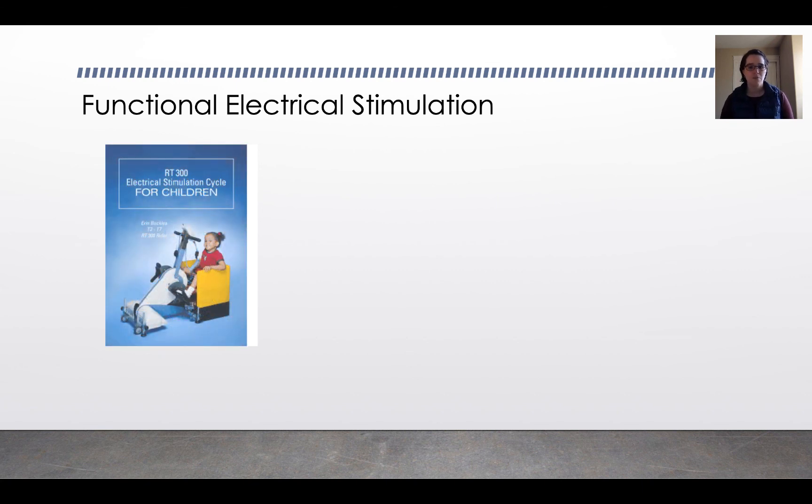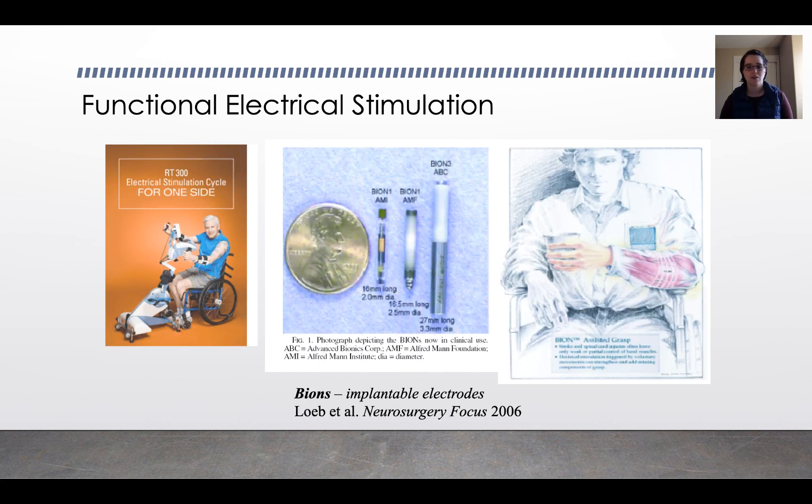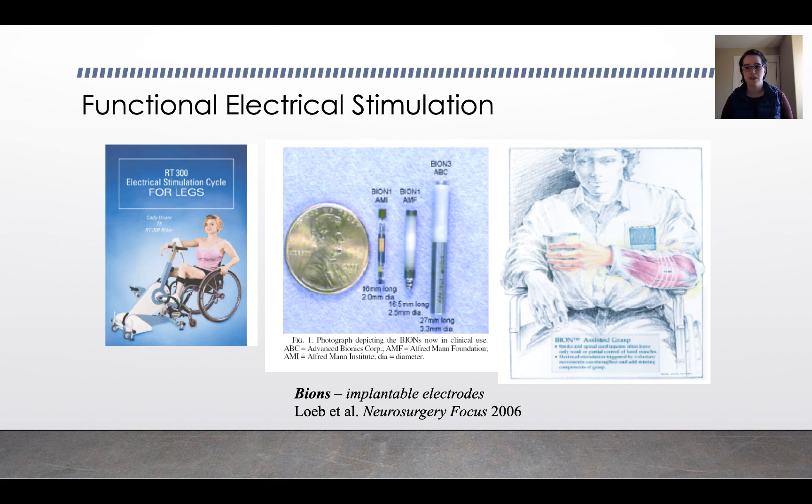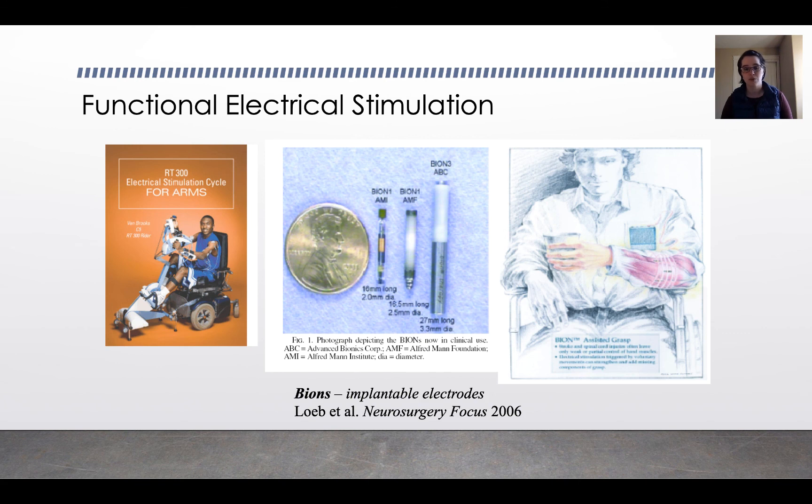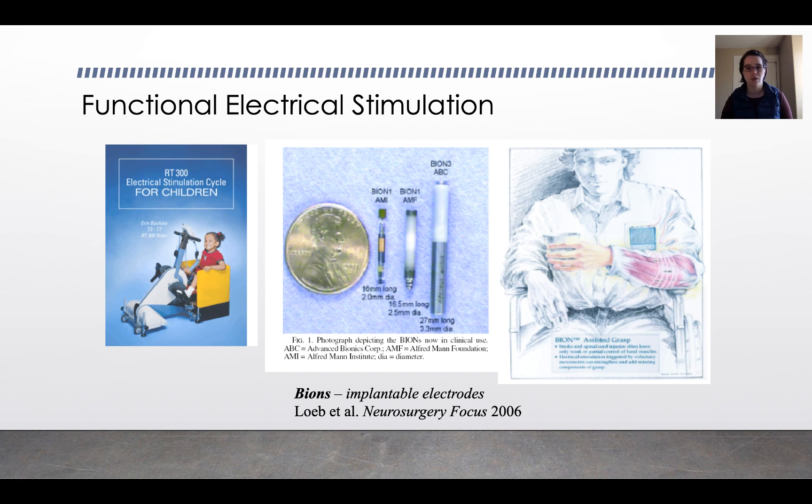But there are clinical applications that work better than the go to the gym without going approach. One of them is stimulation for nerve damage. So people who need assistance with their grasping or maybe they can't walk, there are ways that you can implant electrodes and use functional electrical stimulation to cause the muscles to contract when you want them to.